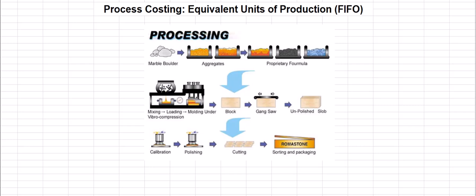Hi everybody, it's Professor Williams and we're going to talk about equivalent units of production in a process costing system using the first in, first out method. Equivalent units are a measure used in process costing to represent the degree of completion of partially finished goods. They help convert partially finished goods into an equivalent number of fully completed units, which simplifies our costing process.